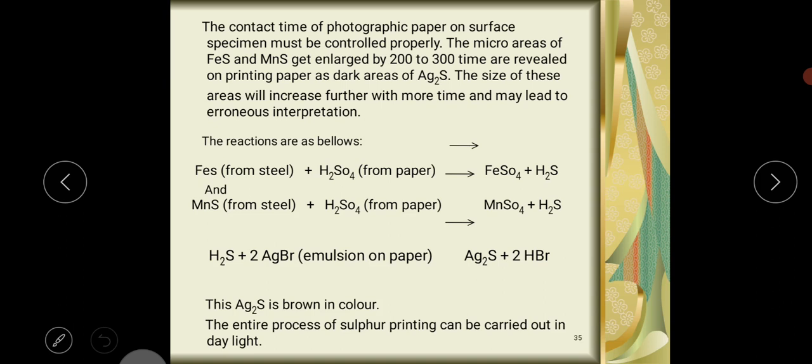The contact time of photographic paper on the surface of the specimen must be controlled properly. The micro areas of FeS and MnS get enlarged by 200 to 300 times and are revealed on printing paper as dark areas of Ag2S.